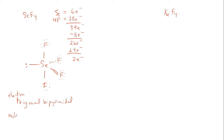For the molecular geometry, we only look at actual chemical bonds. With four bonding domains and one lone pair, the molecular geometry gives us a seesaw shape.